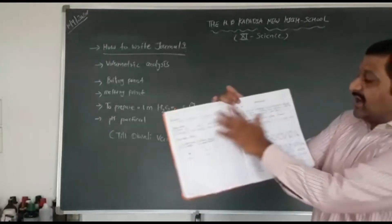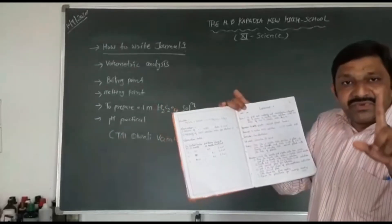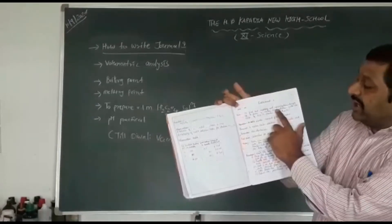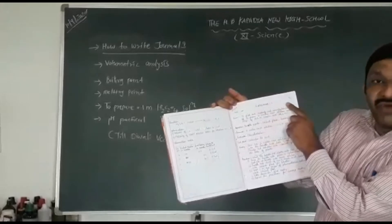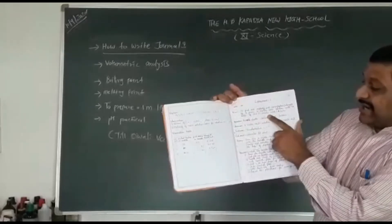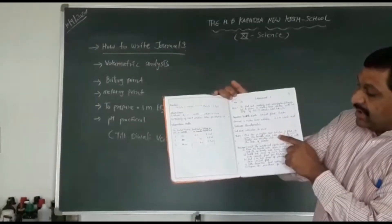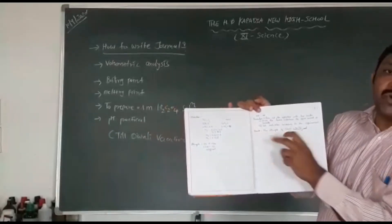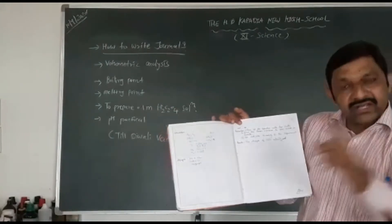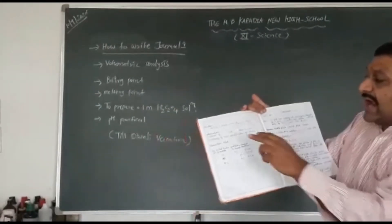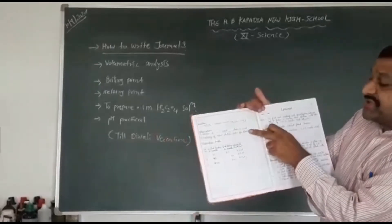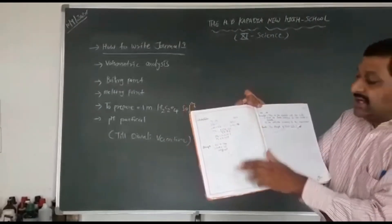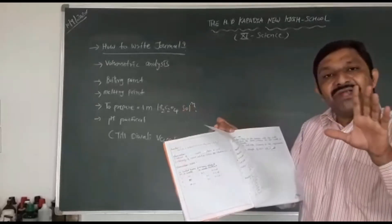I am repeating — listen carefully. In the single line page, write the date, experiment number, and aim first, then apparatus, chemical, indicator, endpoint, theory, procedure, and on the next single line page write precaution and result. In the blank page, write the reaction, then observation table, and lastly calculation.